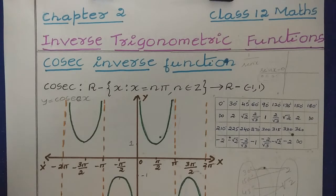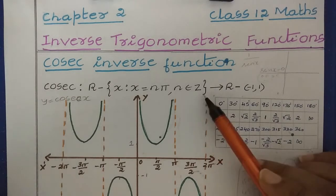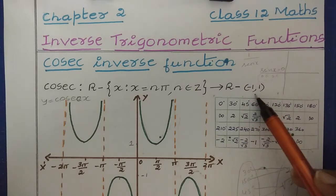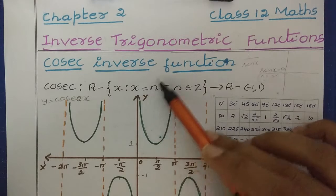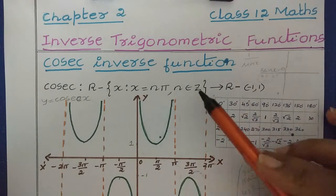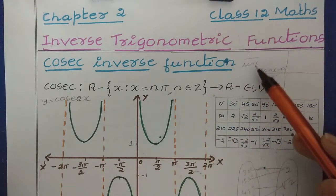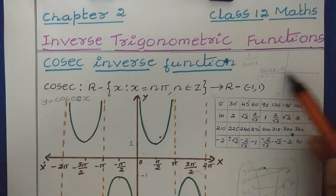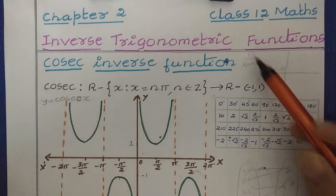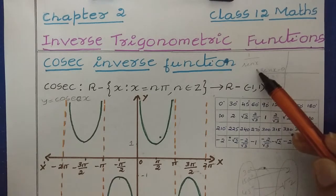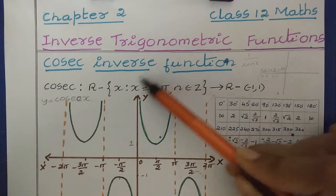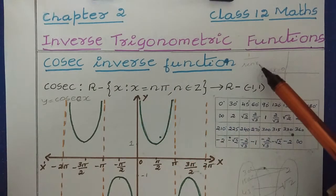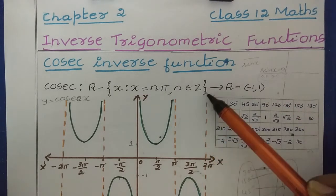First, let us see the domain and range of the Cosec Trigonometric Function. For the Cosec Function, the domain is R minus {x such that x equals nπ, where n belongs to Z}. From the set of real numbers, we have to exclude all these values. The reason is, whenever we consider the Cosec Function, we can write it as 1 divided by sin x. We know that sin x equals 0 at the values 0, π, 2π, 3π, 4π — at these values sin x is equal to 0. So 1 divided by 0 gives infinity, which is undefined. That is the reason we have to exclude all these values from the set of real numbers.